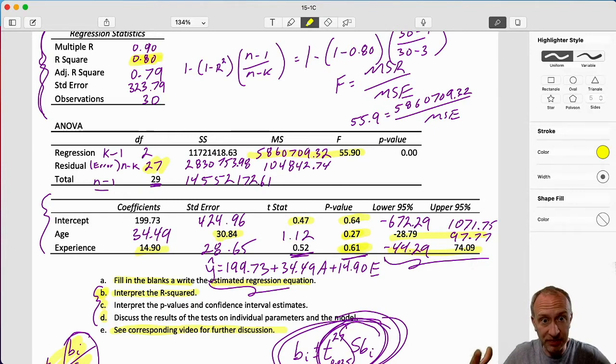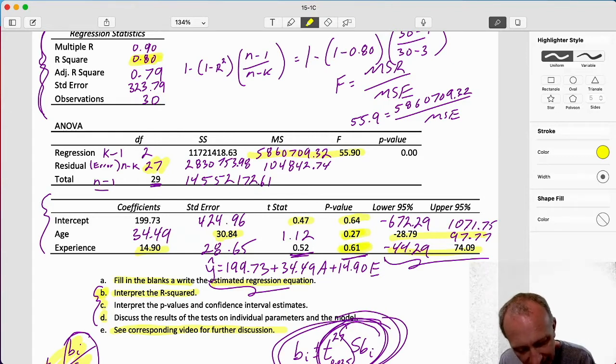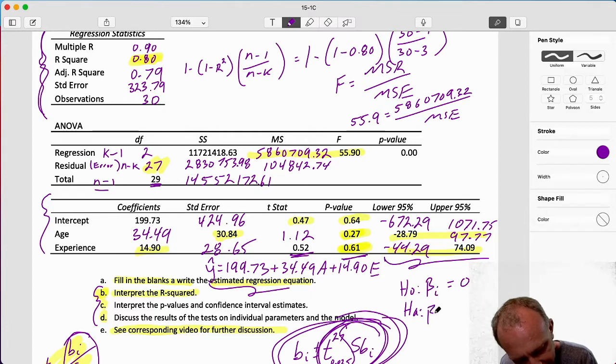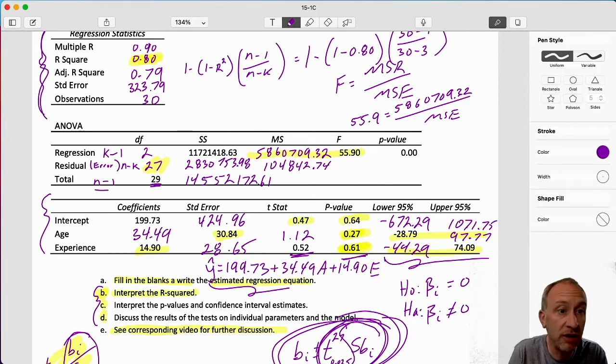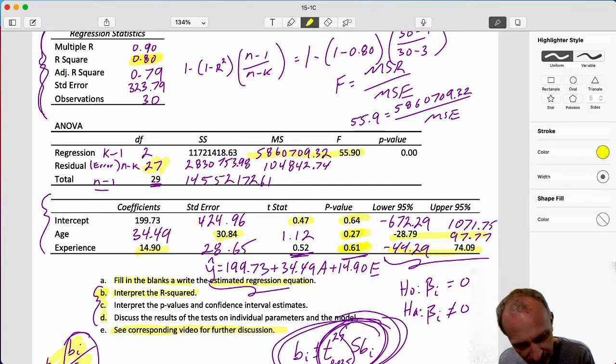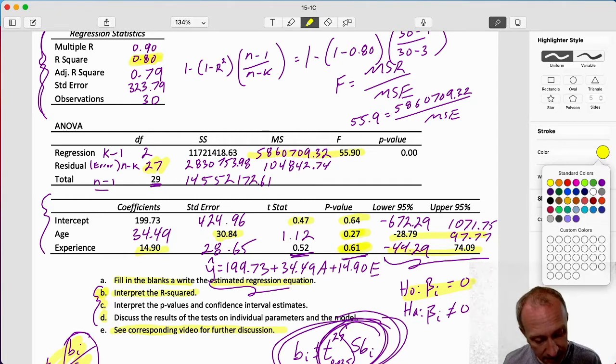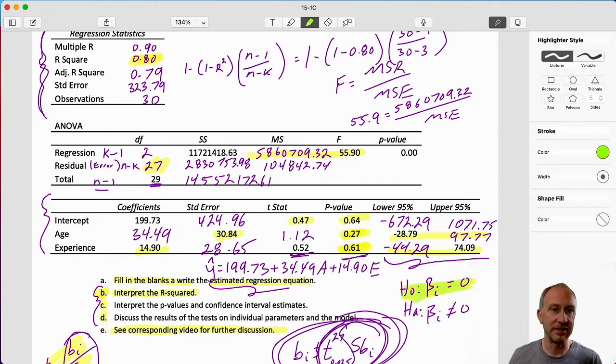What I'm interested in is whether or not there exists a relationship between age and salary, experience and salary. And what these results are telling me, those p values, remember what those tests are, that null and alternative hypotheses for the t tests are testing whether they are individually different from zero. And in both cases, I'm not rejecting. Beta one is not statistically different from zero. And beta two is not statistically different from zero.